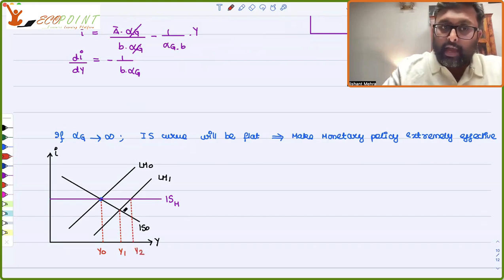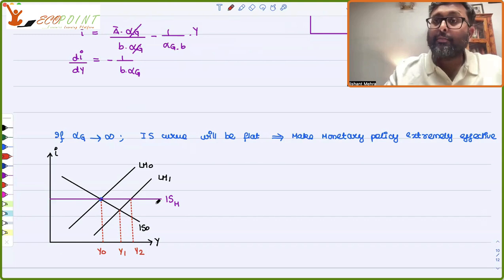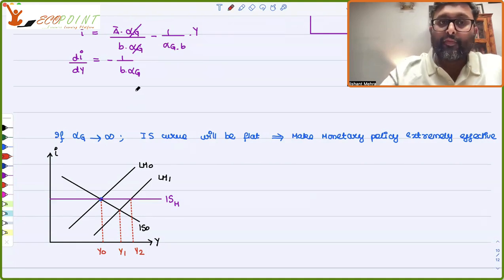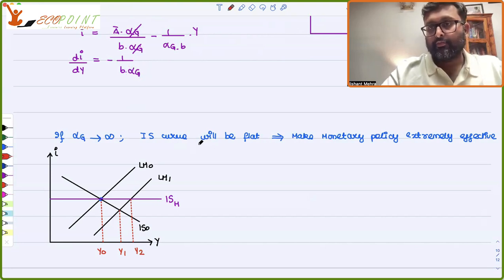So do you understand this? And if the IS curve is horizontal, it means that the slope of the IS curve is infinity, slope of the IS curve should be 0. And when is the slope of the IS curve 0? When alpha G is going to go towards infinity. When alpha G is going to go towards infinity, then only the slope of the IS curve is going to be 0.